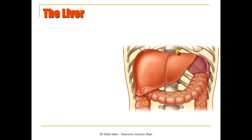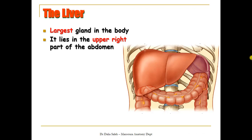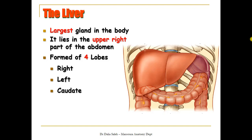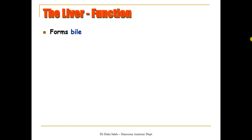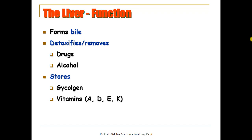The liver, one of the accessory digestive organs, is the largest gland in the body. It lies in the upper right part of the abdomen and is formed of four lobes: the right and left lobes visible from the front, and two smaller lobes — the caudate and quadrate lobes — visible from behind. The liver performs over 500 functions, including formation of bile, detoxification (removal of drugs and alcohol), and storage of glycogen, fat-soluble vitamins (A, D, E, K), iron, other minerals, and cholesterol.